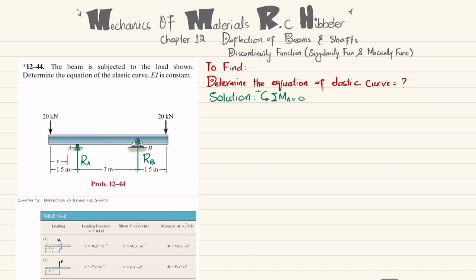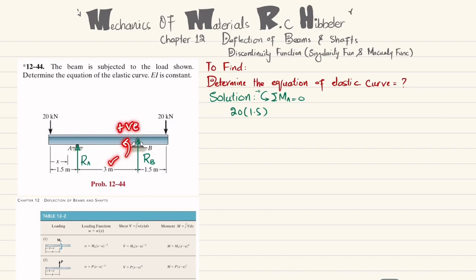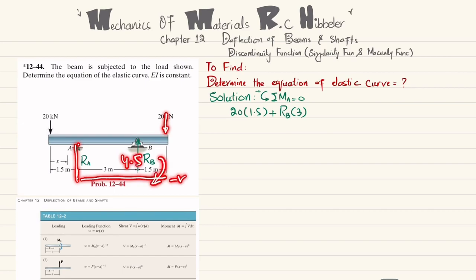About point A, the first moment is due to the 20 kN force at a perpendicular distance of 1.5 m, producing a counterclockwise moment, so it is positive: 20 × 1.5. The second moment due to R_B at a perpendicular distance of 3 m is also counterclockwise, so: +R_B × 3. The last moment due to the 20 kN force at a distance of 4.5 m produces a clockwise moment, so: −20 × 4.5 = 0.